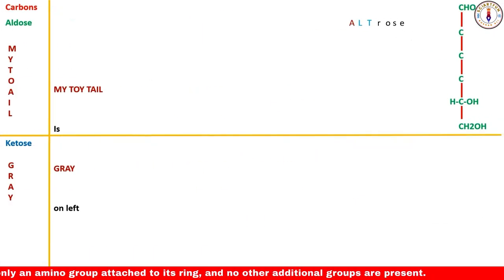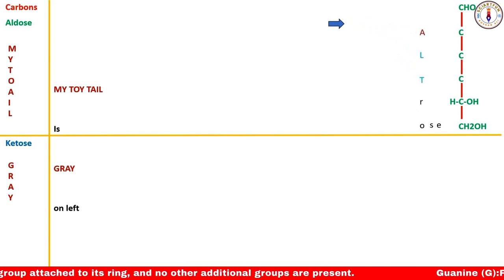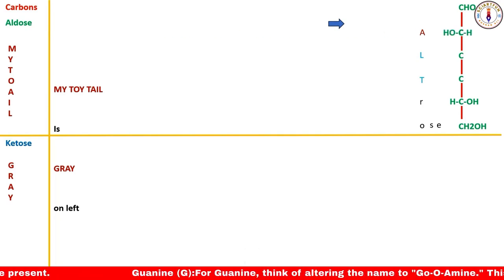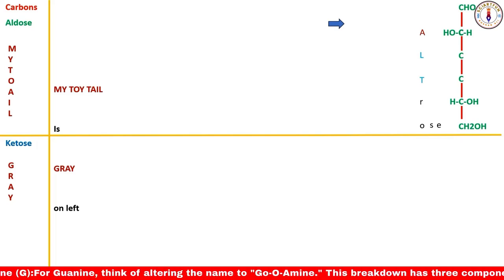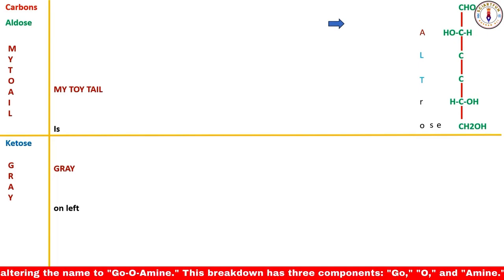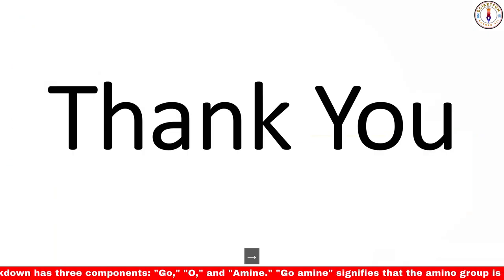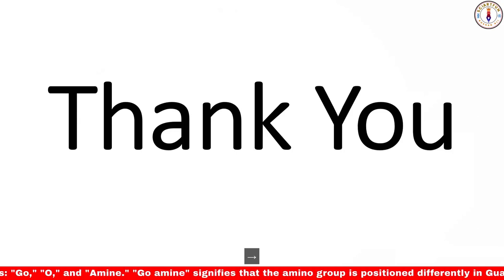The last sugar is altrose. Write the name vertically — A, L, and T are important. A is a member of the set, so OH here is on the left side. However, L and T of altrose are reversed — they belong to the set but here they mean the OH is on the right side. This is the only sugar that does not obey the rule. I hope you will never forget how to draw the structures of monosaccharides. Please subscribe to my channel — thanks for watching and bye!